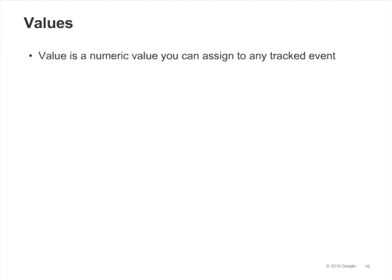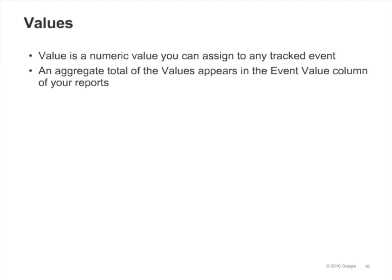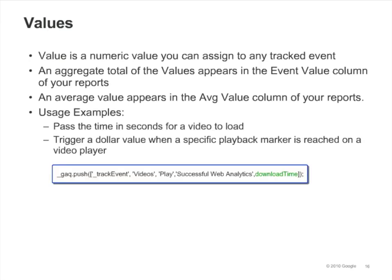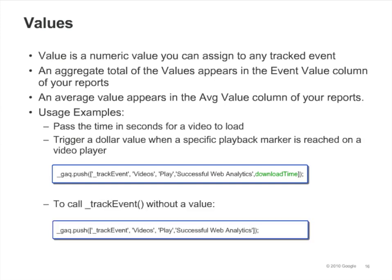Value is the fourth and optional argument to trackEvent. Unlike the other arguments, which are all strings, value is an integer. You can use it to assign a numeric value to a tracked page object. You'll then be able to see a sum total of these values in the event value column of your event tracking reports, and an average of these values in the average column. So you might, for example, specify a dollar value when a specific playback marker is reached on your video player. To call trackEvent without a value, simply omit the argument.